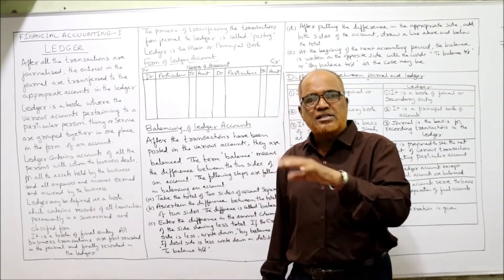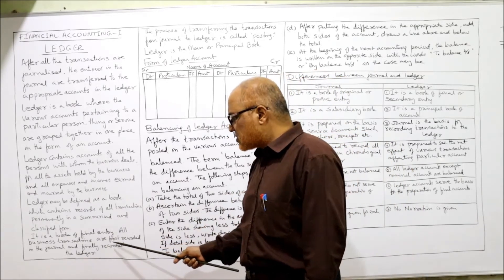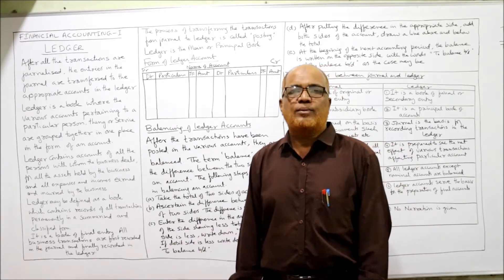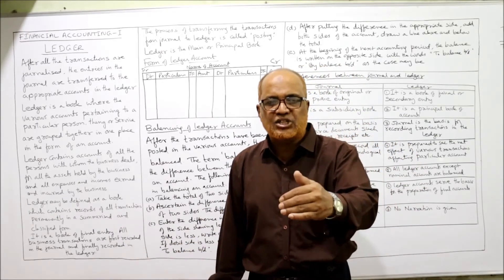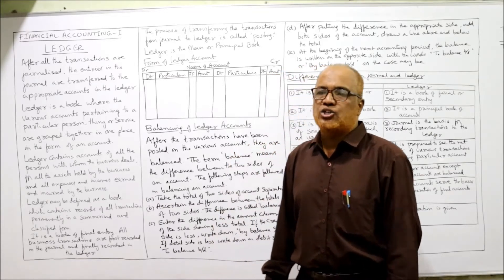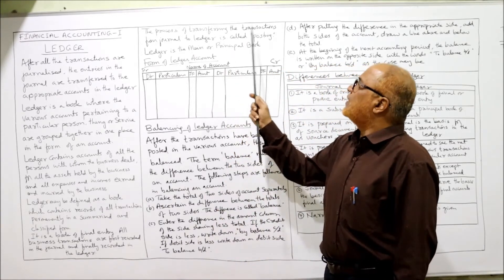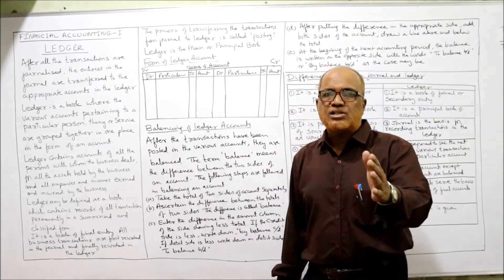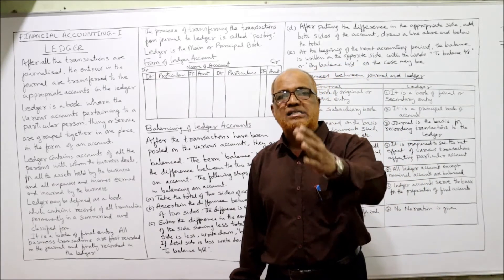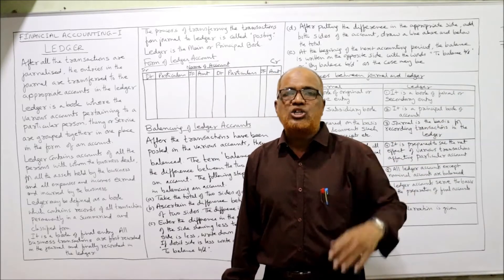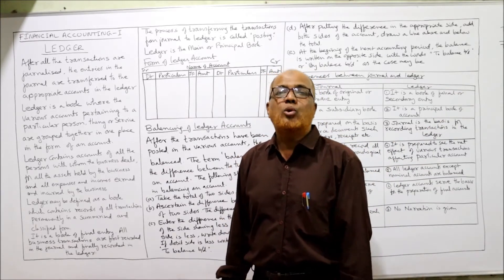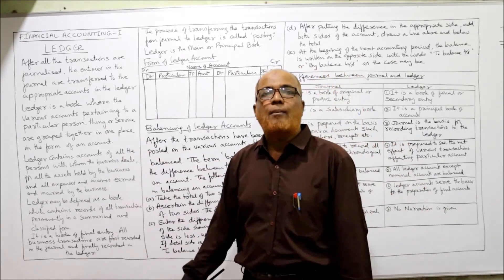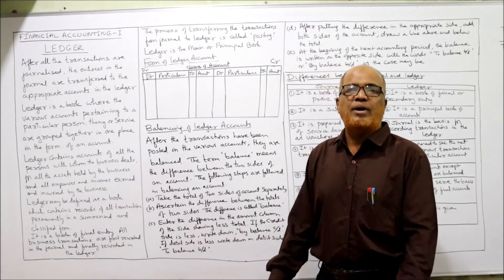Ledger is a book of final entry — all business transactions are first recorded in journal and then recorded in ledger. The process of transferring the entries from journal to ledger is called posting. This is the complete explanation of the ledger; in an examination a theory question may ask you to explain ledger, and this discussion will be more than enough.